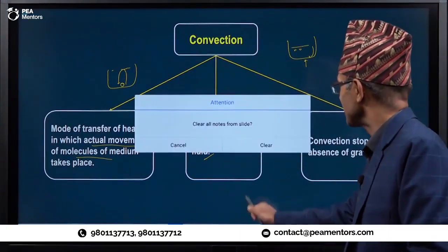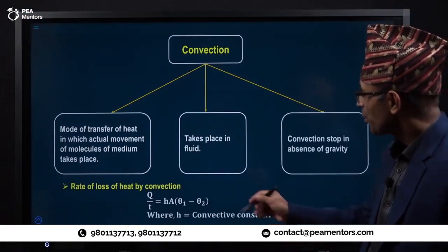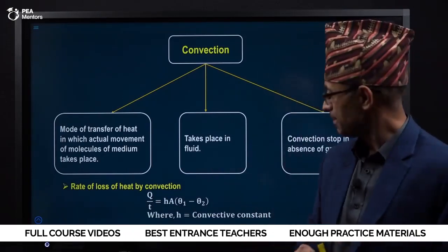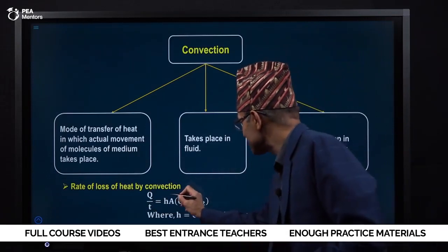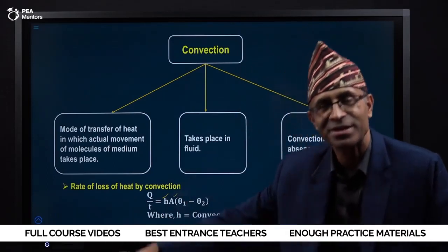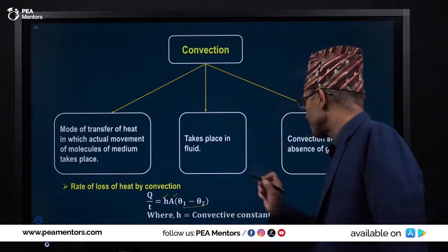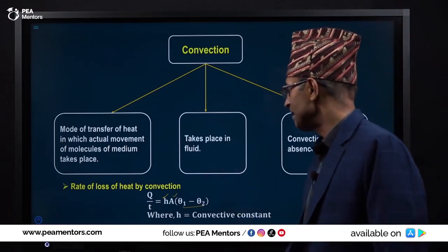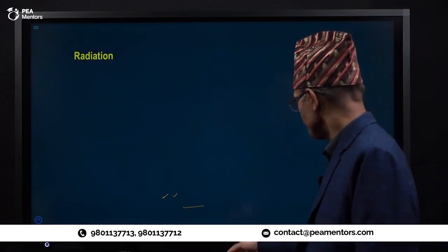Let's go to the rate of loss of heat. The rate of loss of heat or rate of flow of heat by convection — H is the convective constant that depends on the nature of the material, area exposed, and temperature difference. The formula is: Q by T equals H times A times (theta 1 minus theta 2).